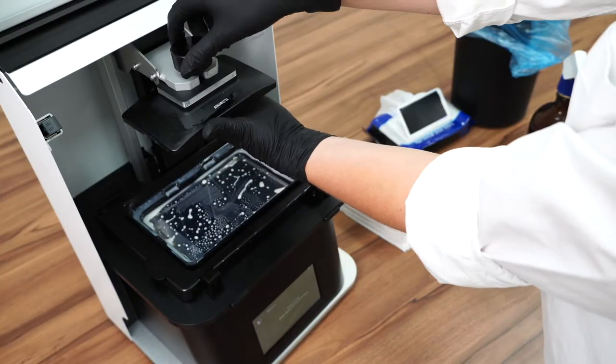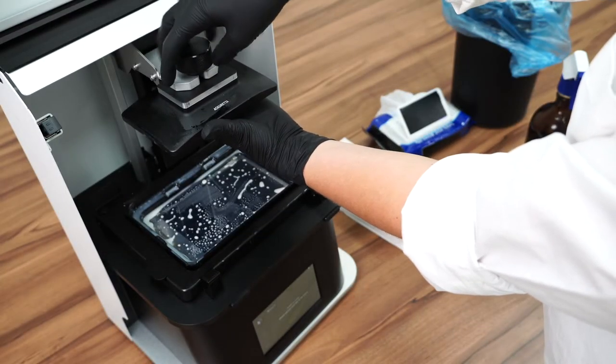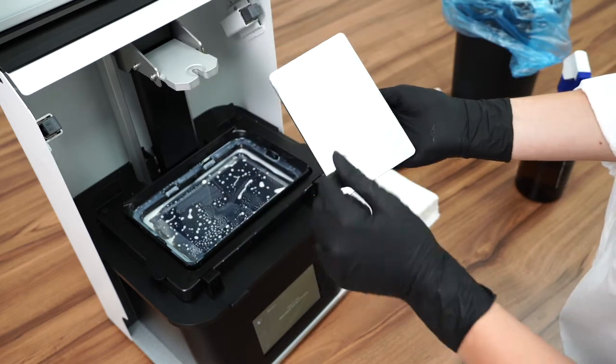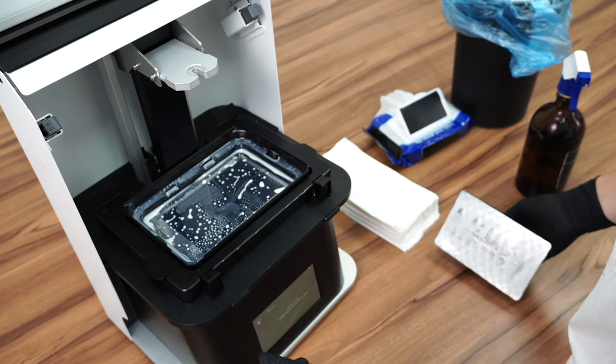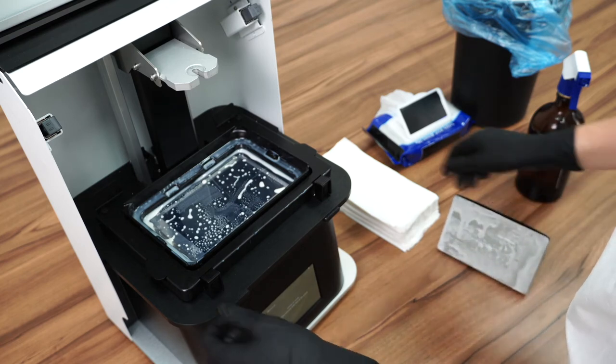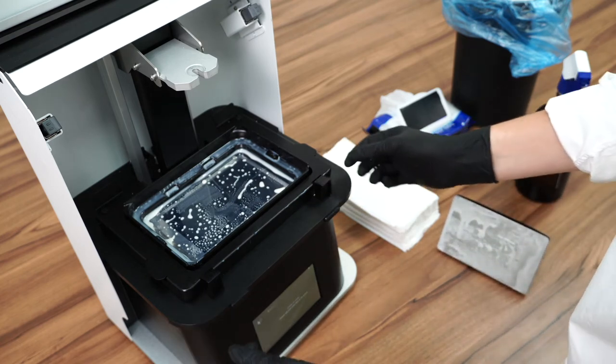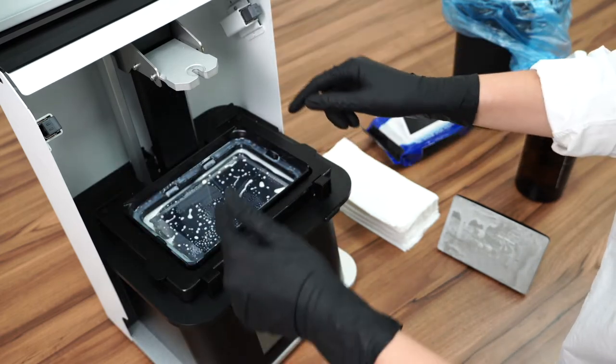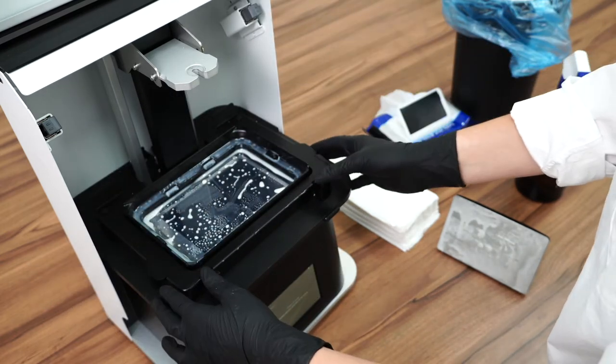Your first step is always going to be removing the build platform. Sol is actually designed in a way that you always have to remove that first because otherwise you can't lift the vat out of the printer. We've done it that way because we want to avoid you spilling any resin on the print screen or around the printer.